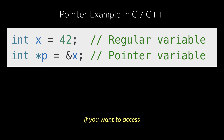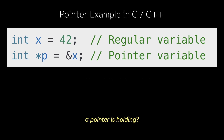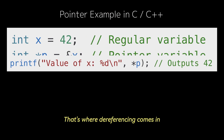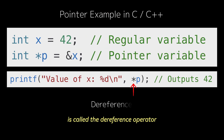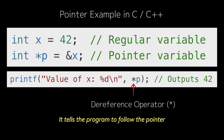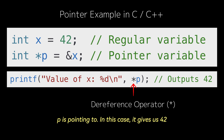What if you want to access the actual value stored at the memory address a pointer is holding? That's where dereferencing comes in. The asterisk before p is called the dereference operator. It tells the program to follow the pointer and fetch the value stored at the address p is pointing to. In this case, it gives us 42.